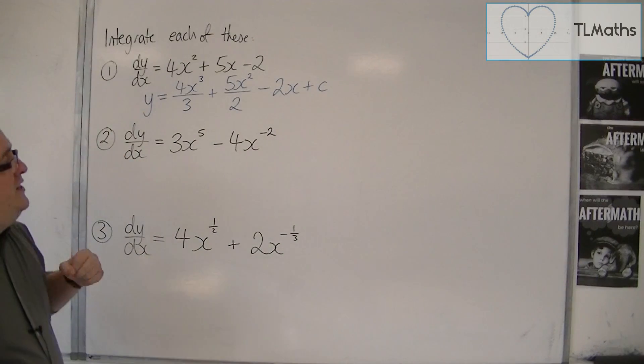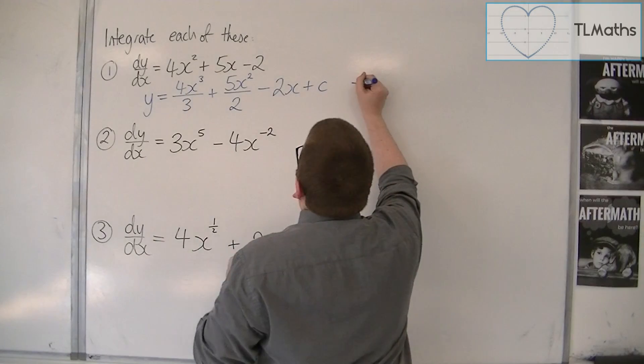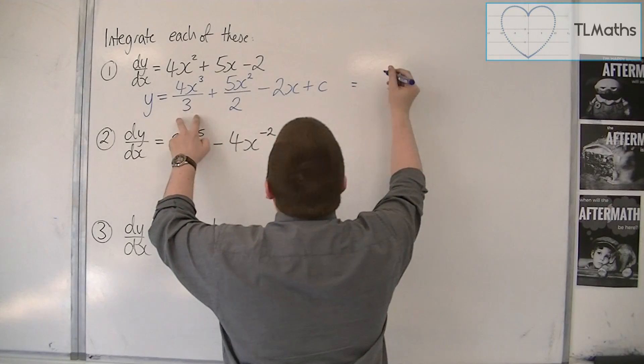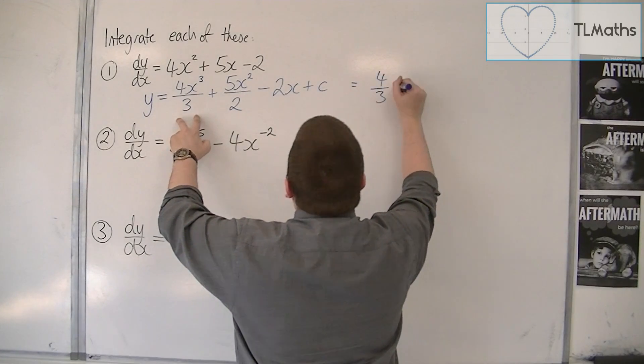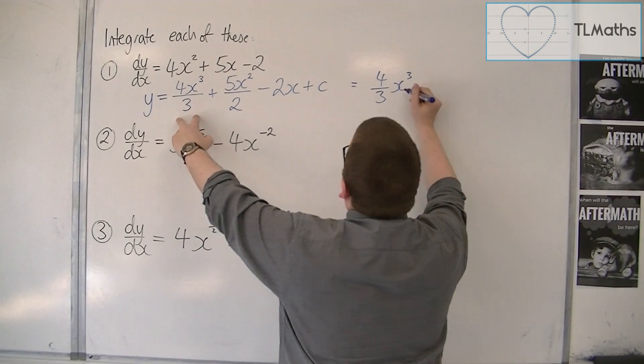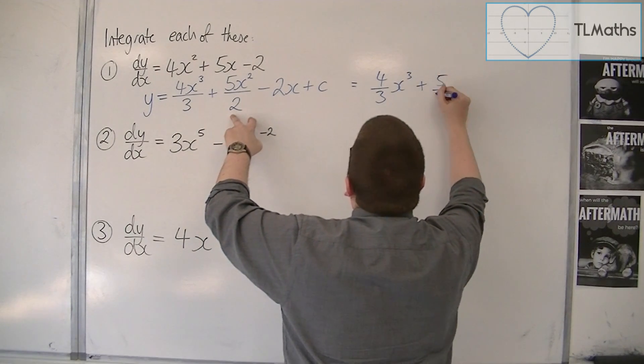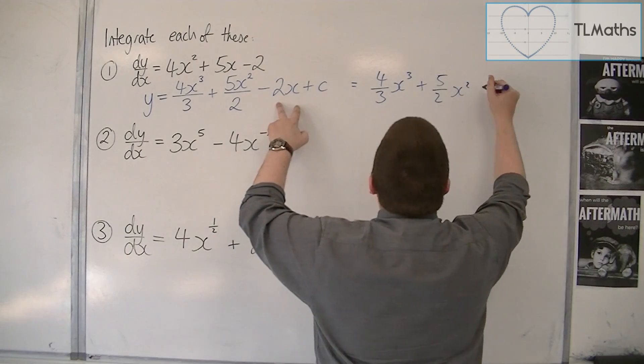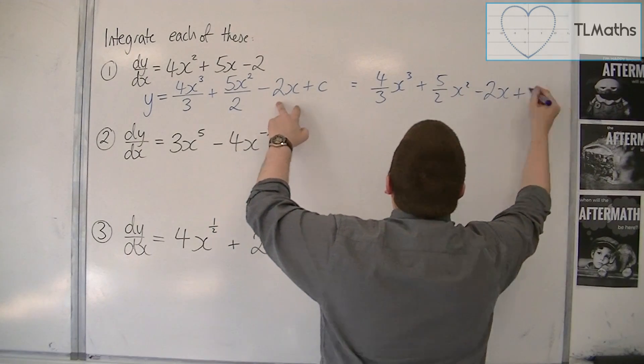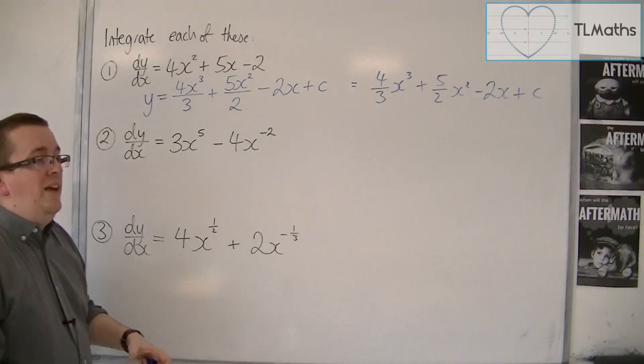You can either write it like that, or you can write each of these elements like this. You can have the fraction out the front if you like. So, 4 thirds x cubed plus 5 halves x squared minus 2x plus c. These two things are exactly the same.